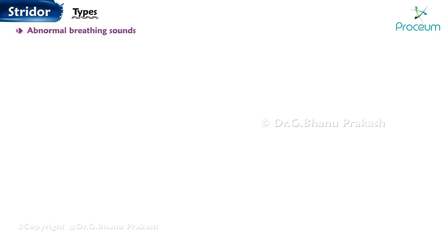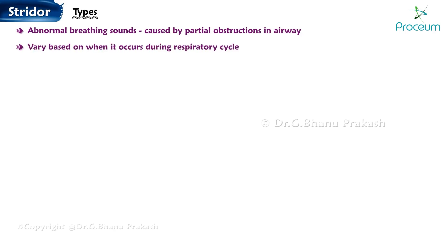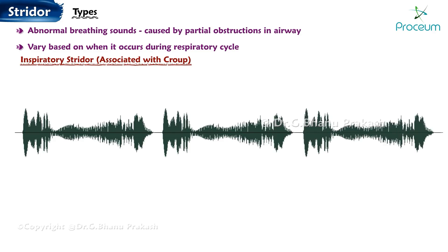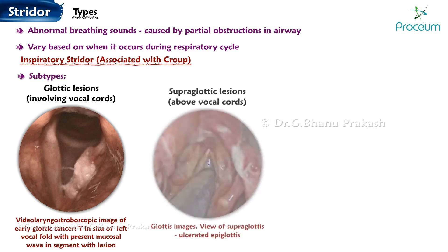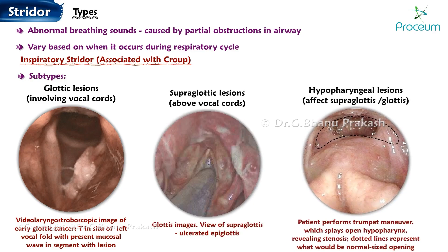Types. Strider is a medical term used to describe abnormal breathing sounds caused by partial obstructions in the airway, and it can vary based on when it occurs during the respiratory cycle. Inspiratory Strider, associated with croup, occurs during the inhalation phase of breathing. It is commonly associated with lesions in different areas of the upper airway. Subtypes include glottic lesions involving the vocal cords, supraglottic lesions above the vocal cords, and hypopharyngeal lesions that affect the supraglottis or glottis.